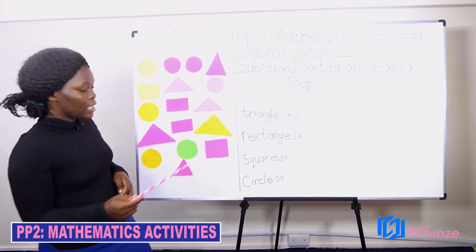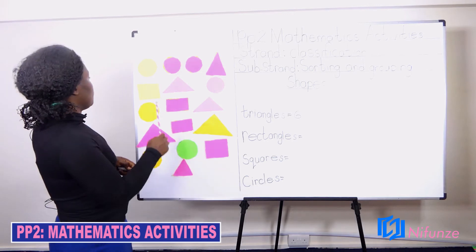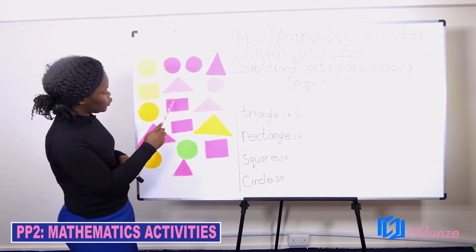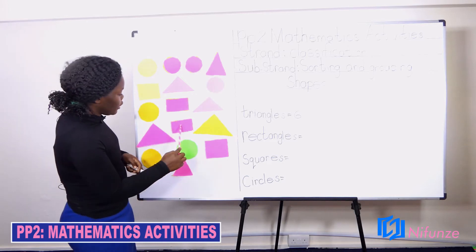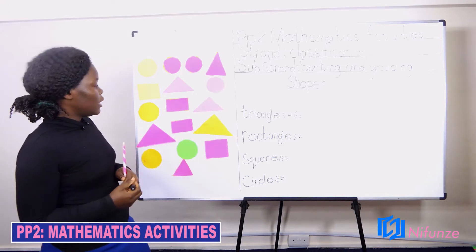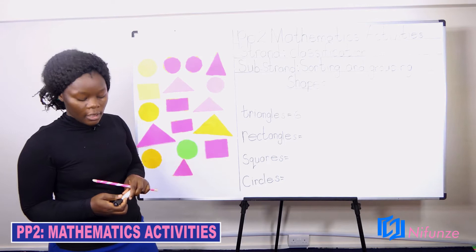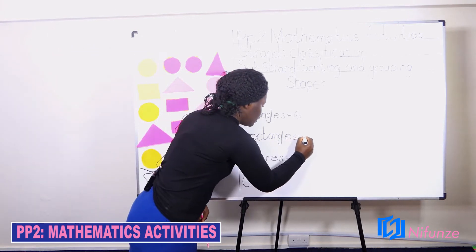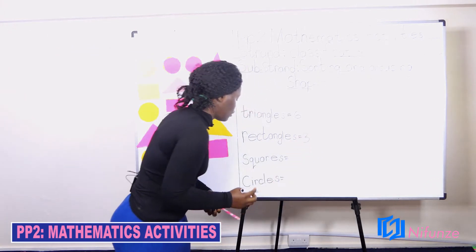Do we see another one, class? Let's count together again. One, two, three. We only have three rectangles. Now the teacher is going to write number three to indicate the number of rectangles.